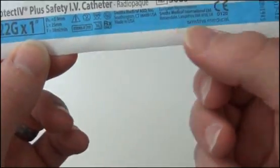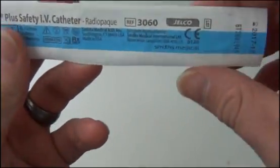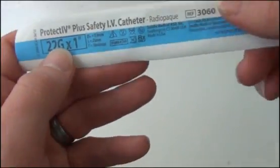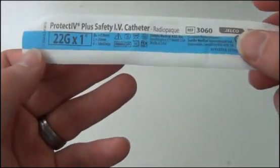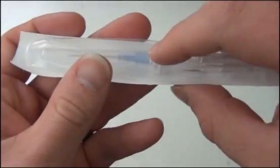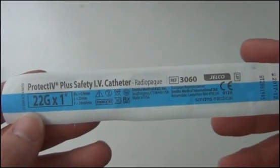And with the Gelco, they're all color-coded. On the packaging here, you see this blue color, that's also the color on the hub. So this is a 22-gauge, and then we have the 20-gauge, which is pink, pink here and pink here. And then we also have an 18-gauge, 18 is green and green here. There's multiple other sizes that will just depend on what your hospital orders and what they use most often.